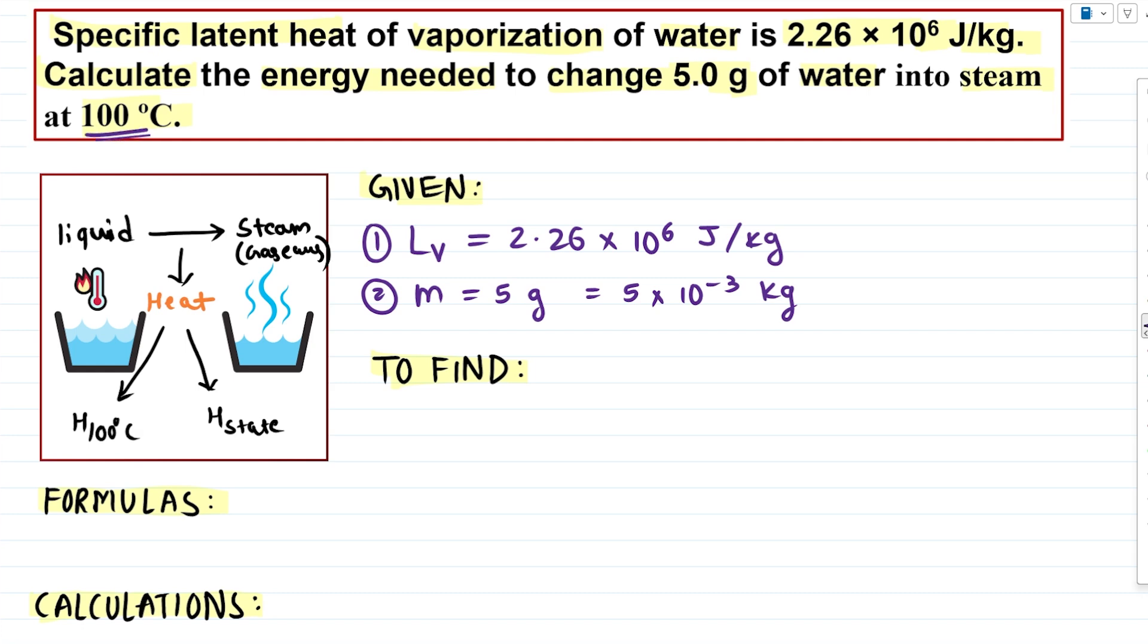Here in the question temperature is given, but we won't be using this temperature for our solution. So for the solution there are only two quantities, latent heat of vaporization and mass. And on the basis of this, what are we required to find? Well, we are required to find energy needed for the state change. So let me write that quickly also.